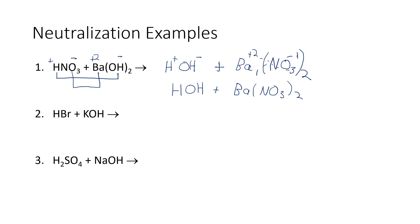So our products are HOH (or H₂O) plus Ba(NO₃)₂. However, it's not balanced — we have two nitrates on the right but only one on the left. Putting a coefficient of 2 in front of nitric acid gives two nitrates on both sides, but now there are two hydrogens on the left. To balance, we put a coefficient of 2 in front of water. That also gives us two hydroxides on the product side, matching the two hydroxides on the reactant side. The equation is now balanced.